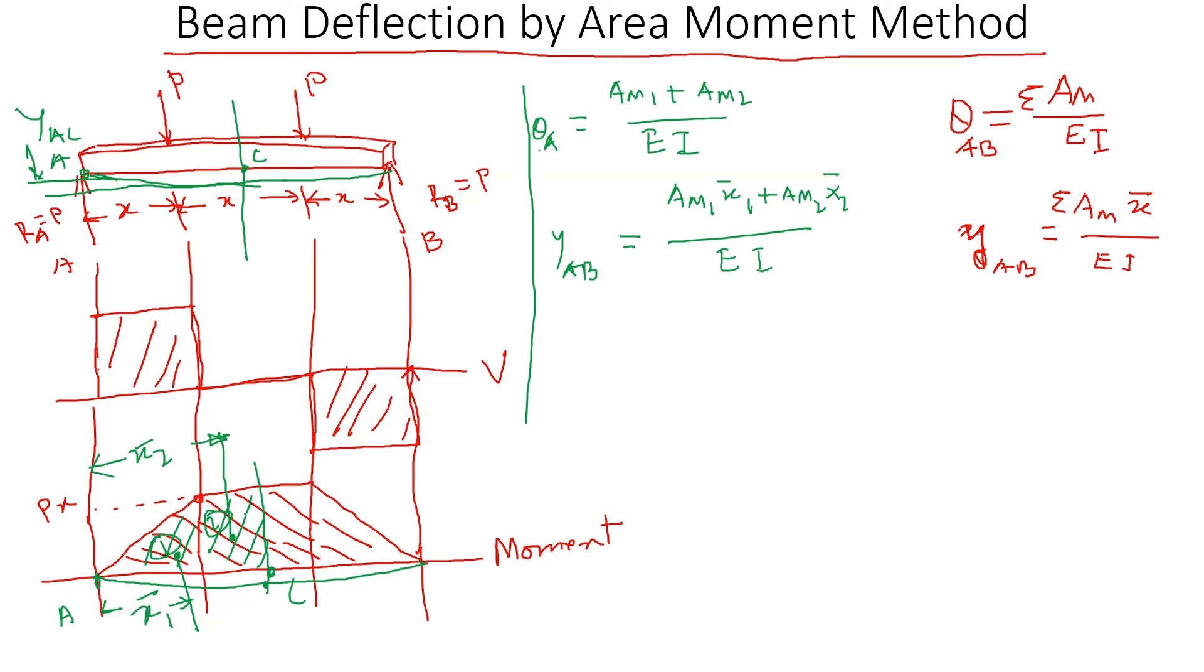Now you know how to calculate the rectangle area and the triangle area and you can get these values. That is how you calculate beam deflection by area moment method.